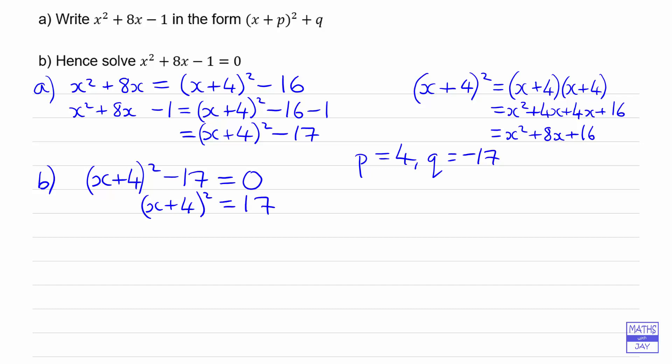And then square root both sides. So we'll have x plus 4 on the left-hand side. And this is where we need to remember that when we square root, there's two possible answers here, either the positive or negative root of 17, square root of 17. And then we just subtract 4 from both sides to get the x on its own.